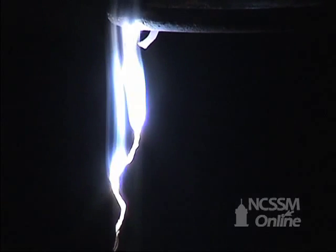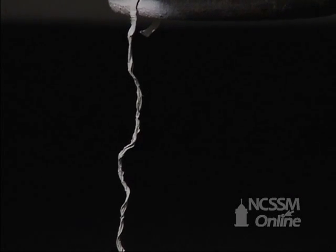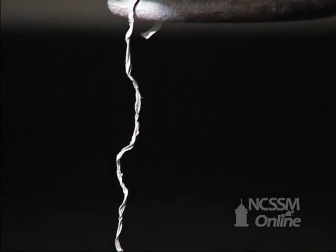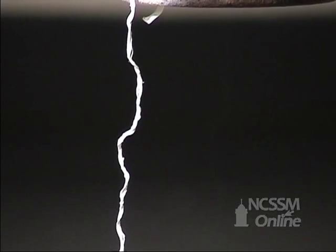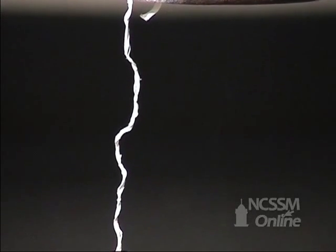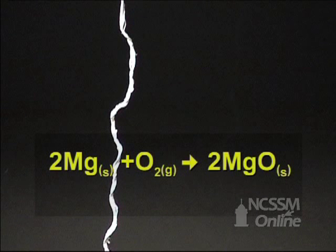The combustion reaction is a very rapid reaction producing a lot of heat and light. What we're left with is a white solid, which is the magnesium oxide.